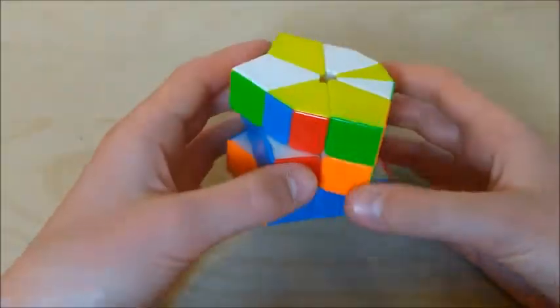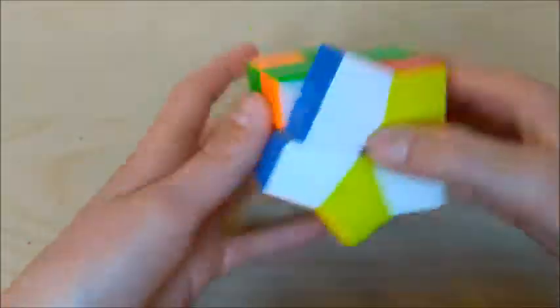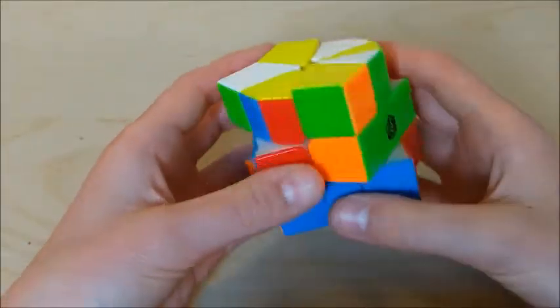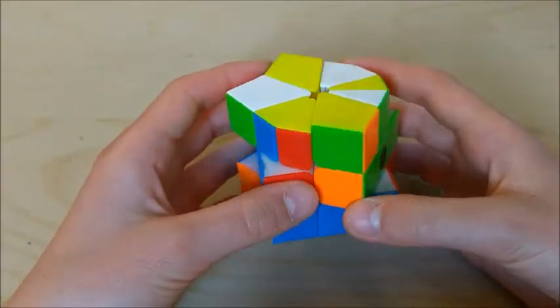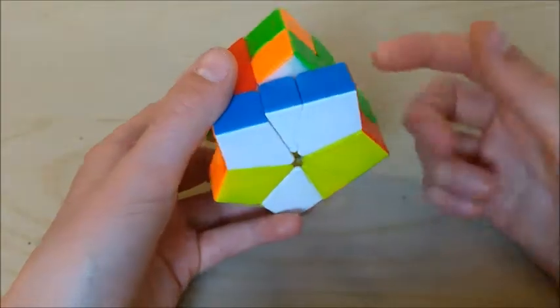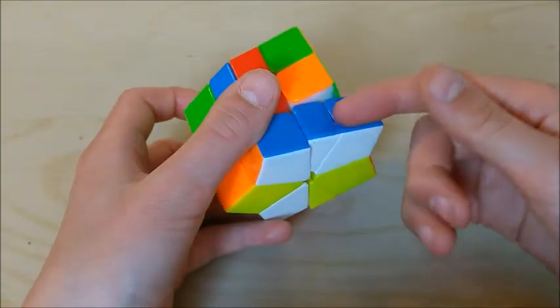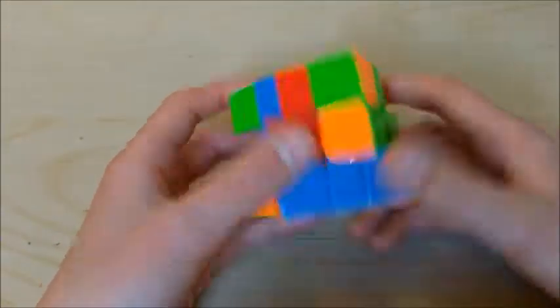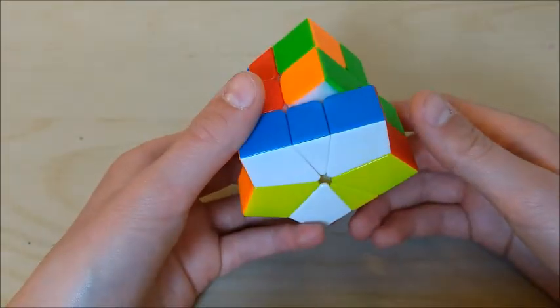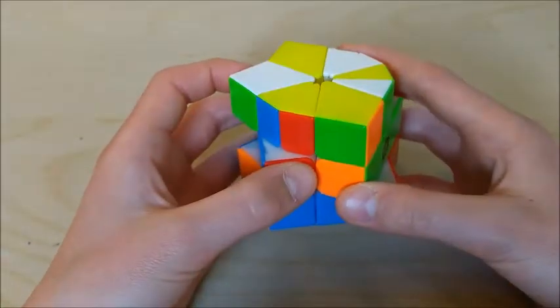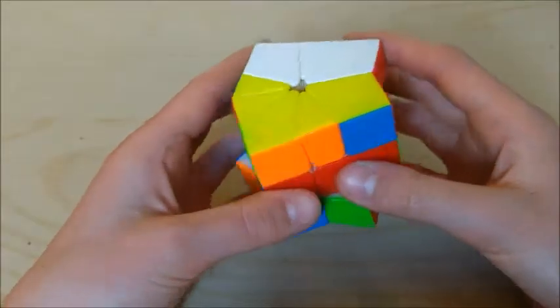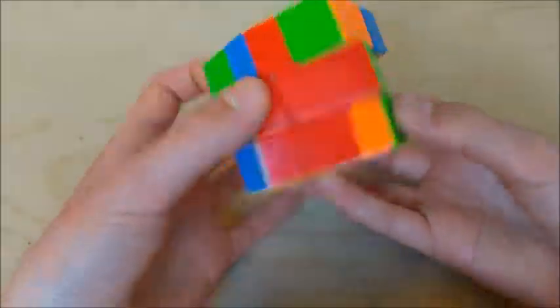Alright, so this is the third scramble. And for this one, there's no way I can preserve this entire block, but I can probably preserve these two pieces. So what I think I would do is like this for Scallop Kite. And then I'm gonna do like that.